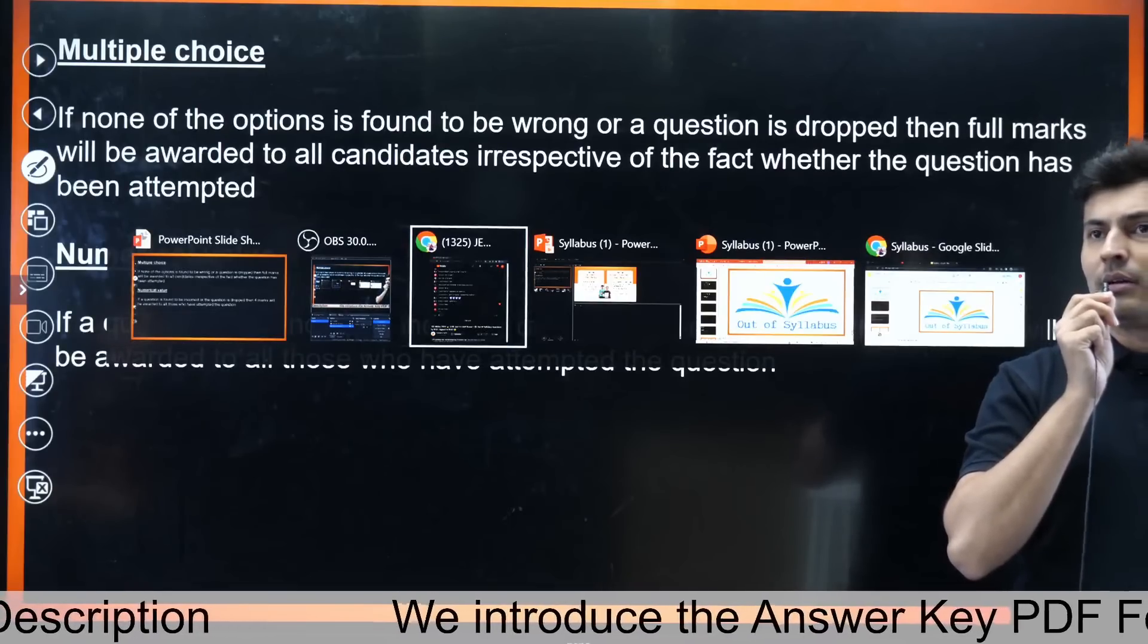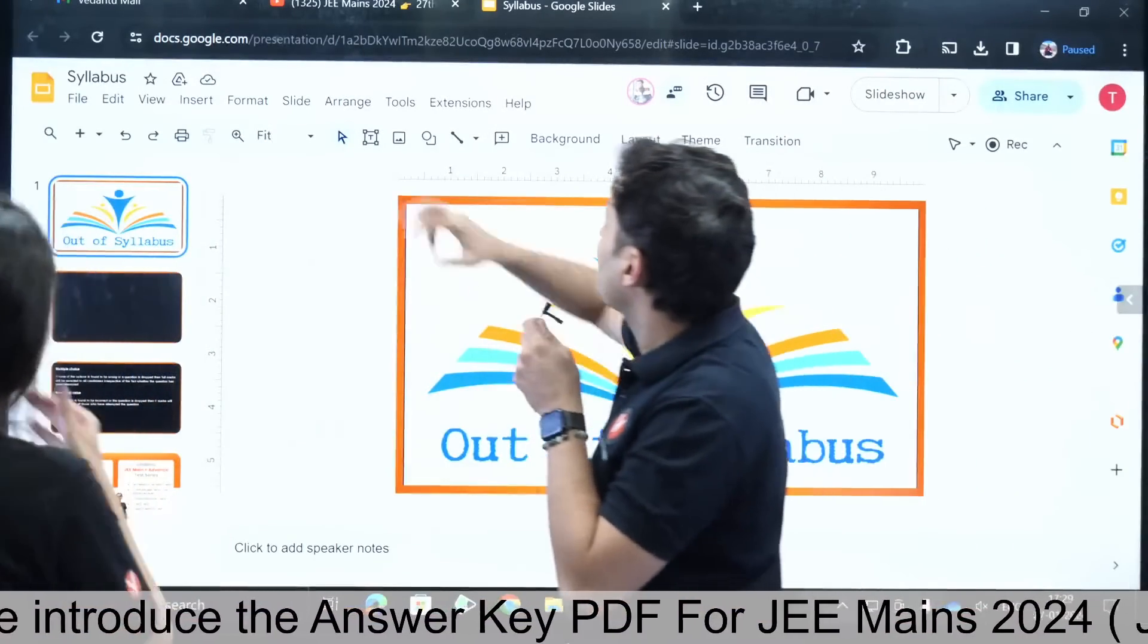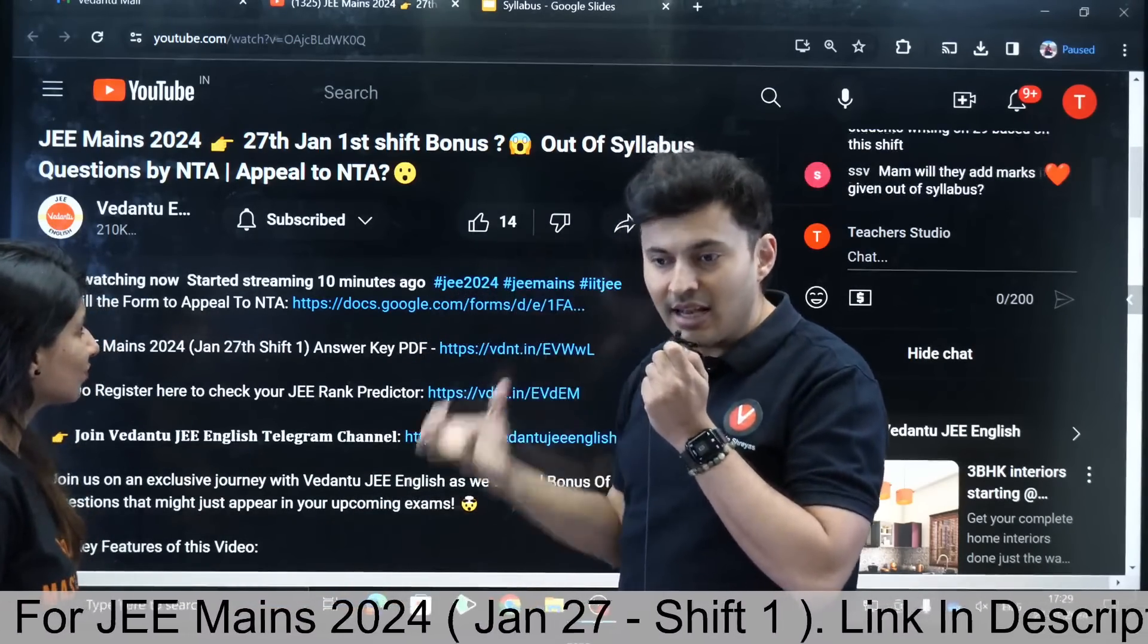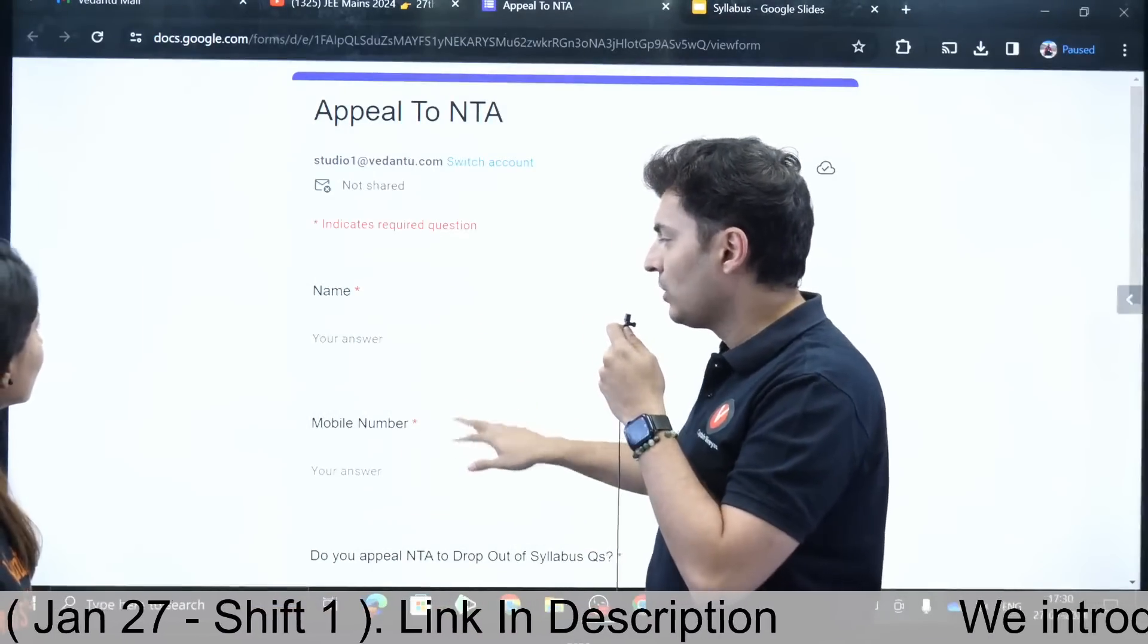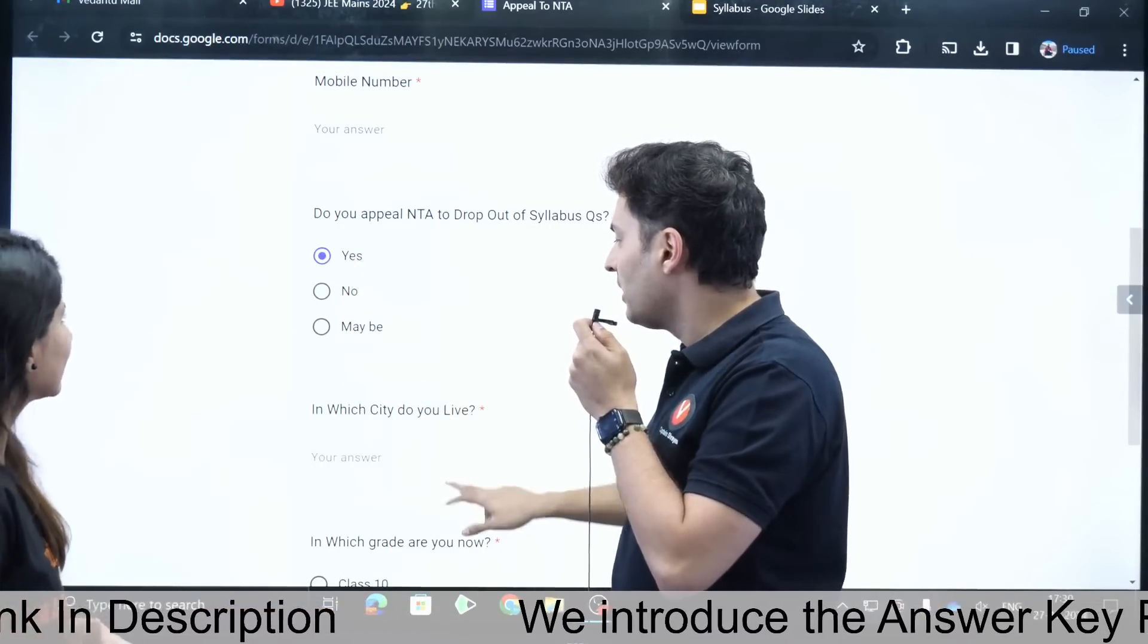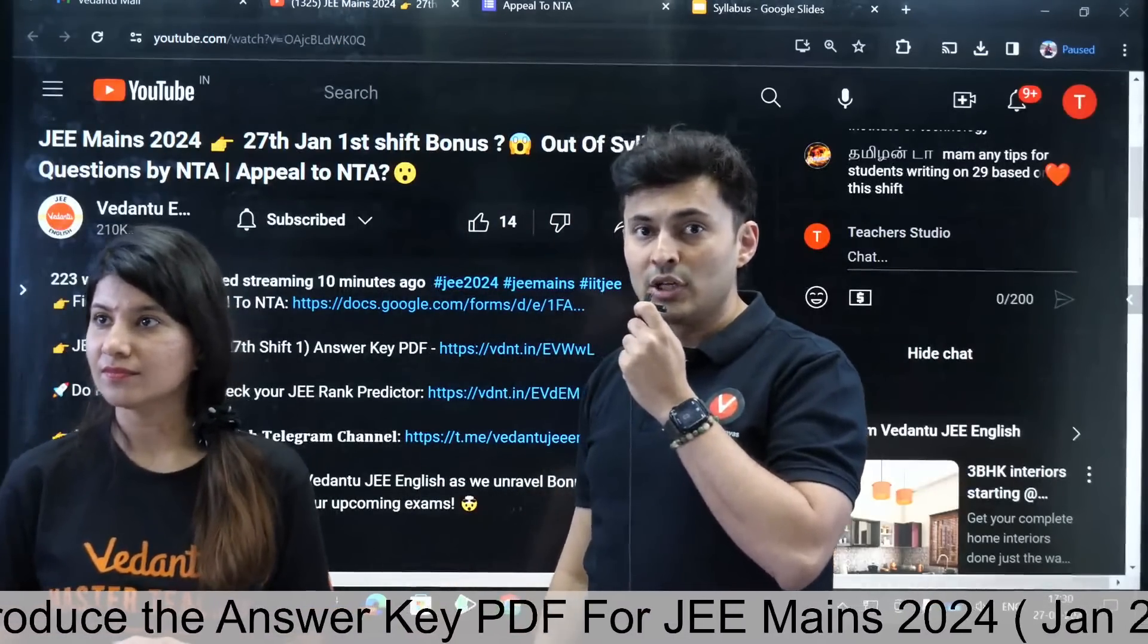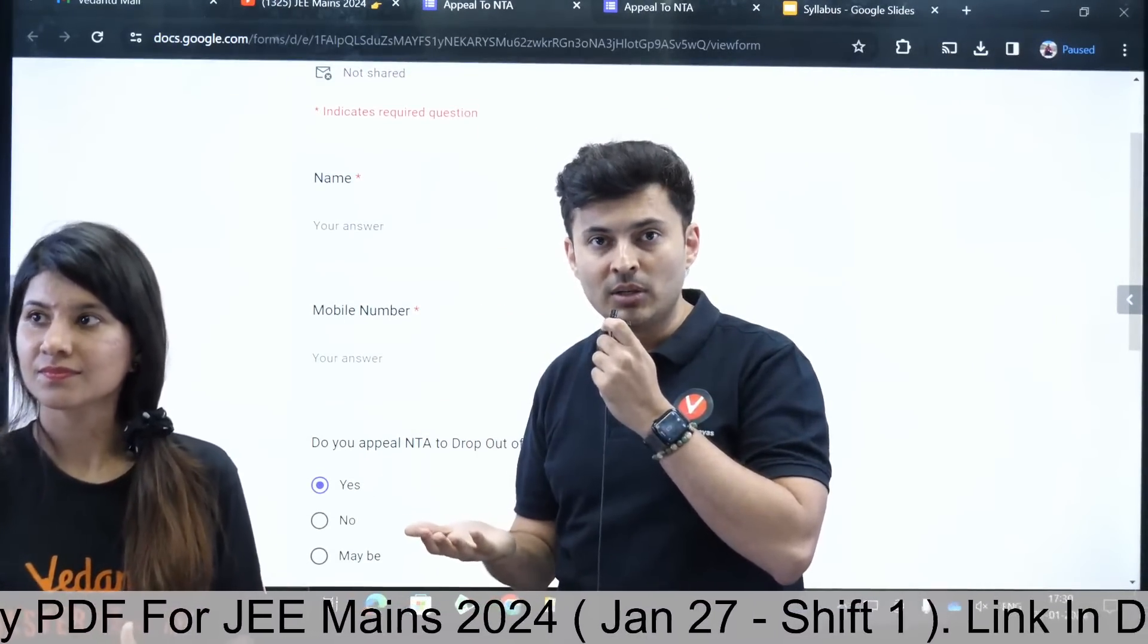But when it is in numerical type, if it is found to be incorrect or the question is dropped, four marks will be awarded to only those people who have attempted the question. This is crazy. So it depends - I believe our category of that one question falls in multiple choice, so that means everybody might claim. Now how do we claim this bonus? As you are watching this particular video, what you should do is go in the description box, fill a form to appeal to NTA. Because we are going to ask this on your behalf as well, because we have a lot of teachers, we have a lot of students, and we have the strength and capabilities to demand this to NTA.